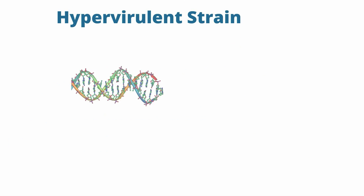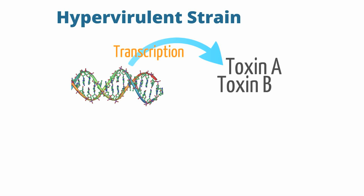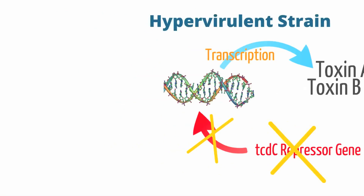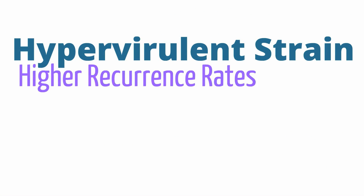The severity of C. diff infection is dictated by risk factors and by the type of strain that causes infection. So what makes the hypervirulent strain so infectious? Normally there are genes that allow C. diff to produce toxins. A gene called the TCDC repressor gene partially represses the toxin-producing gene. But in the hypervirulent strain, the repressor gene is nonfunctional, allowing a large production of toxin A and B, leading to a more profound infection.